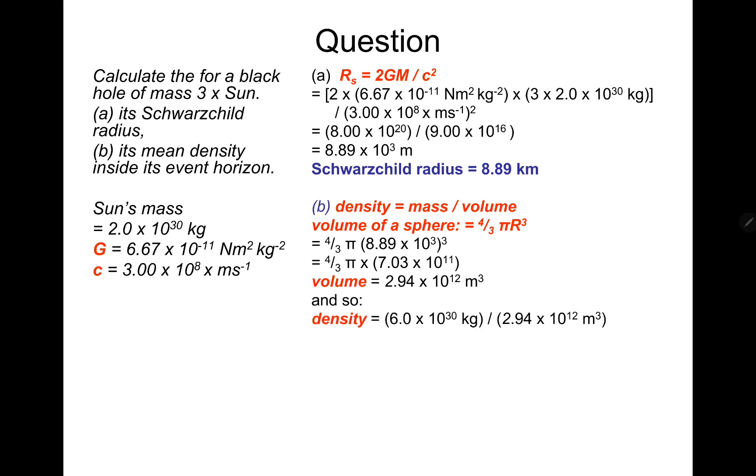And density is mass over volume. So we've got the mass. The mass is 3 times the mass of the sun, so 6 times 10 to the 30 kilograms. Remember that's on the data sheet in astronomical data. And that should give a mean density inside the event horizon of 2.03 times 10 to the power of 18 kilograms per cubic meter.